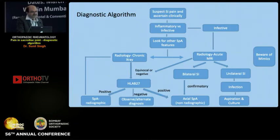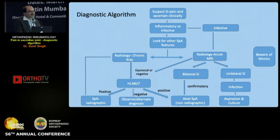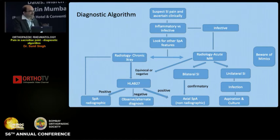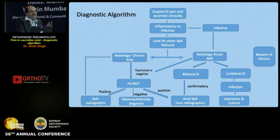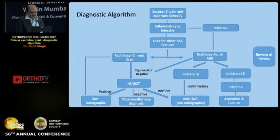In conclusion, the diagnostic algorithm steps are: suspect and ascertain SI joint involvement clinically; determine the nature of the illness; look for other SpA features on examination; choose imaging modality based on duration of illness; if unilateral, suspect infection — if bilateral, favor axial spondyloarthropathy. If imaging is non-conclusive and SpA features are present, HLA-B27 becomes important — if positive it supports the diagnosis; if negative, observe for disease evolution or consider an alternate diagnosis. Thank you.